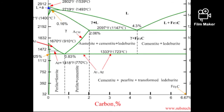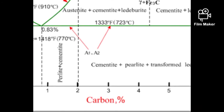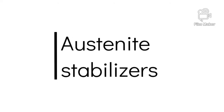If we see the iron-iron carbide phase diagram, ferrite is the stable microstructure at room temperature. So the question is, how is the austenitic structure in austenitic steel stable at room temperature? The answer to this question is that there are some elements called austenite stabilizers.